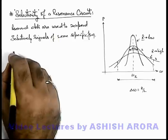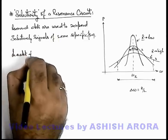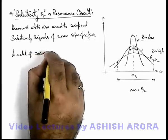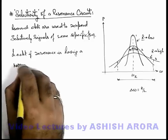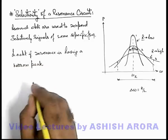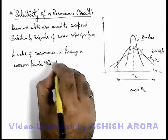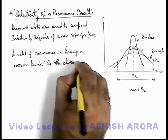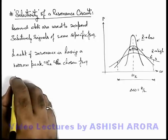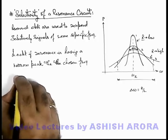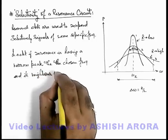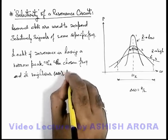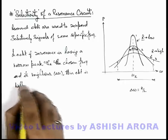In the first circuit, in the neighborhood of the resonating frequency, the power of the circuit will be more than half the maximum only to a very small extent. So it is a very narrow peak circuit — we can say it is a highly selective circuit — because the frequency range at which the power is high is very small. If resonance is having a narrow peak, then the chosen frequency and its neighborhood — the bandwidth — means the circuit is highly selective.